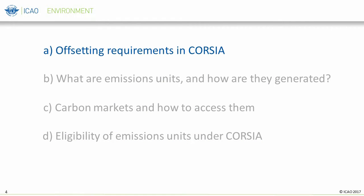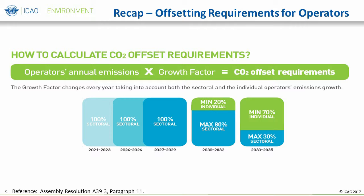Let's begin with a quick recap of the offsetting requirements under CORSIA. Through the previous presentations, you now understand the coverage of international aviation emissions by CORSIA and how the increase of emissions above baseline levels — or emissions gap — is distributed as offsetting requirements to individual operators every year from 2021. The formula to calculate CO2 offsetting requirements is defined as the operator's annual emissions multiplied by the growth factor, as found in Paragraph 11 of Resolution A-39-3. Monitoring, Reporting, and Verification, or MRV, of CO2 emissions is critical to enable such calculations.